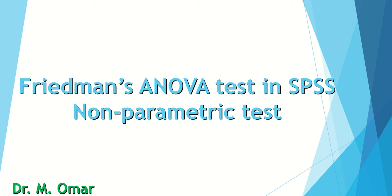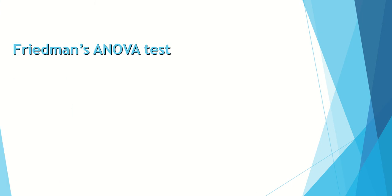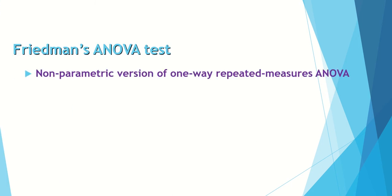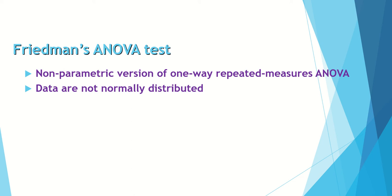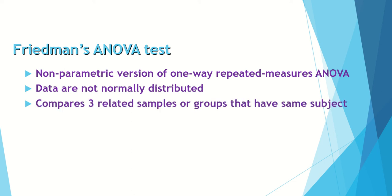Hi everyone, this is Dr. Omar. In this video clip I will show you how to do and use the Friedman ANOVA test in SPSS. The Friedman test is a non-parametric version of one-way repeated measures ANOVA, used when the data are not normally distributed. One of the criteria to use the test is that the data distribution within each group is not normal.